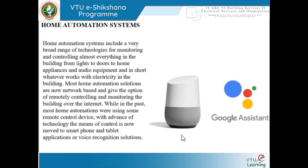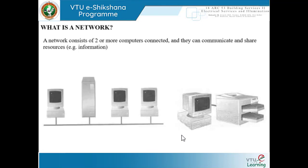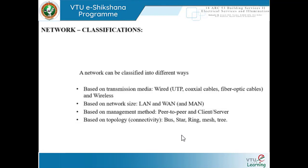Moving on to understanding what a network is — a network consists of two or more computers connected to each other so they can communicate and share information. A minimum of two or more computers connected to communicate and share resources. It need not be just computers — it can be computers, printers, phones, and many other devices that can communicate with each other and share resources according to requirements.